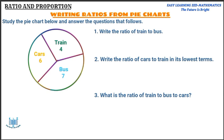The first question is: write the ratio of train to bus. So I'm going to write the ratio of train to bus. We're going to check the segment of train — the number we have there is four. Then we're going to check the segment of bus — we have got seven. So we're going to write four to seven. That is the ratio for train to bus, which is four to seven.